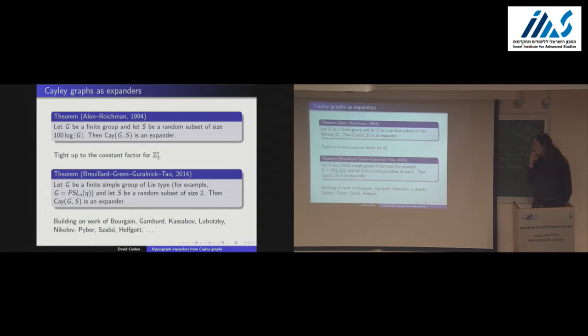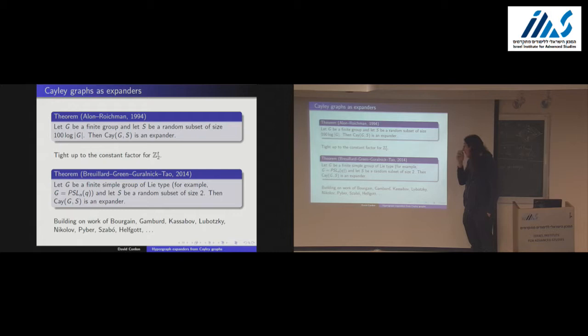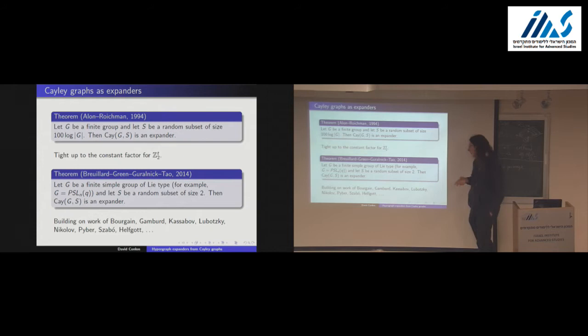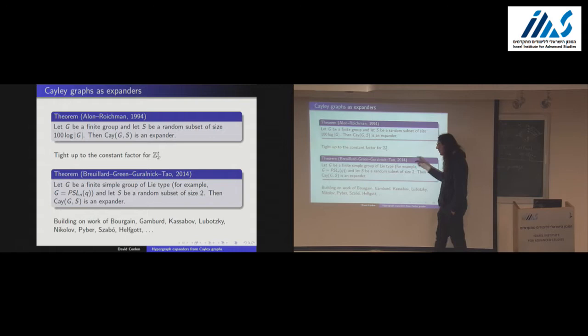There's a relatively recent theorem due to Breuillard, Green, Guralnick, and Tao which says that if you're working in a finite simple group of Lie type of bounded rank, then you can just take two elements (plus their inverses, so four elements), and the resulting Cayley graph is an expander with high probability. It's also true for the alternating group, but you need to take more than two elements there.